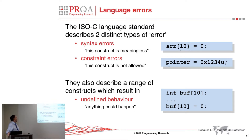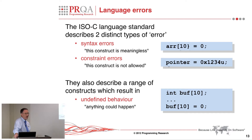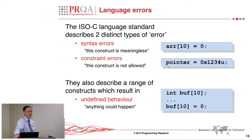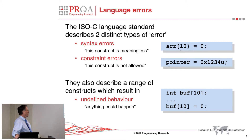A constraint error is where you do something which the language doesn't allow. So assigning an integer value to a pointer is a constraint error — we sort of know what we think we want it to do, but actually it's not allowed in the language. You have to put a cast in if you want to assign a value to a pointer. There's also undefined behaviour, which we've already talked about this afternoon. Undefined behaviour is the stuff which the language simply says anything could happen here — if you have an array index out of bounds, goodness knows what's going to happen.